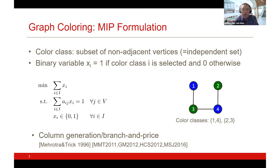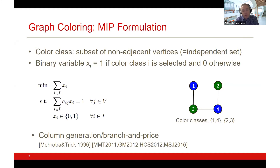The challenge when working with branch-and-price, in this particular application, is the exponential number of color classes you might want to separate. What I do in this work is take a dual perspective: I want to capture the exponentiality in a compact way. Rather than representing all independent sets one by one as columns, I will represent them differently using a graphical representation.